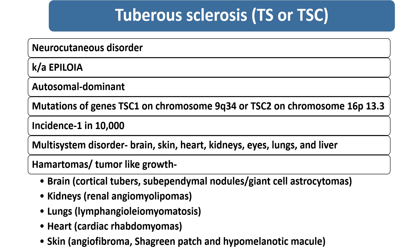In brief about tuberous sclerosis, or tuberous sclerosis complex, it is a neurocutaneous disorder. Other neurocutaneous disorders include, for example, neurofibromatosis, Sturge-Weber syndrome, or von Hippel-Lindau disease. Tuberous sclerosis is also known as epiloia — EPI for epilepsy, LOI for low IQ, and A for angiofibroma. It is autosomal dominant due to mutation of the gene.